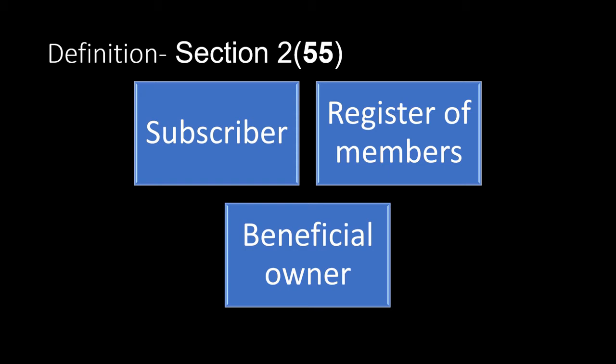According to Section 2, subsection 55, a member is one who subscribes to the memorandum. That means the first subscribers to the memorandum will be members of the company — they may or may not be shareholders. Additionally, any other person who agrees to become a member by entering his name in the register of members of the company is also a member. The register of members is an important document showing the names of all members, and by allowing your name to be entered there, you agree to become a member.